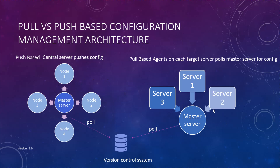In a pull-based system, clients contact the server independently of each other, therefore the system as a whole is more scalable than a push system. However, the downside is that you need to install and manage an agent on each of the target systems. In a push-based system, it is very easy to do the initial configuration as you do not need to manage or install an agent. However, once you start scaling your infrastructure, things start to get complicated and you start seeing performance issues.